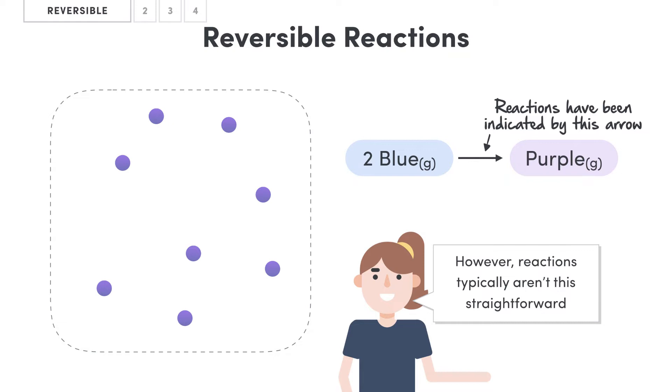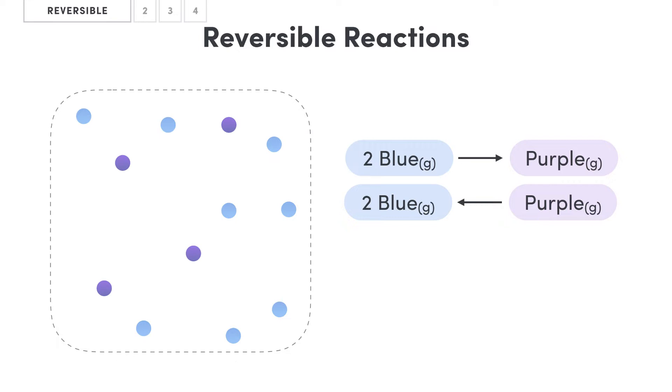This is because what we find is that for many reactions, the reaction is actually capable of operating in the reverse direction, just like in this example here with purple reacting to produce blue. And these types of reactions, those that can proceed in both directions, are what we refer to as reversible reactions.